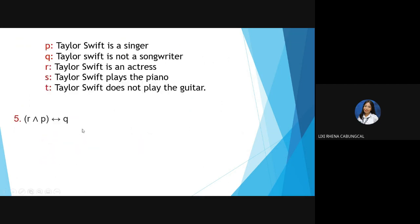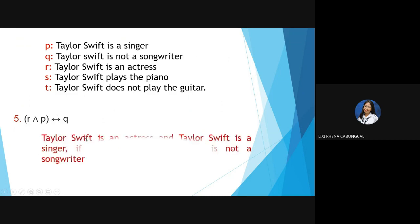Number 5: (R ∧ P) ↔ Q. This uses the biconditional sign. Answer: 'Taylor Swift is an actress and Taylor Swift is a singer, if and only if Taylor Swift is not a songwriter.' The conjunction sign connects R and P, and the biconditional connects them to Q.